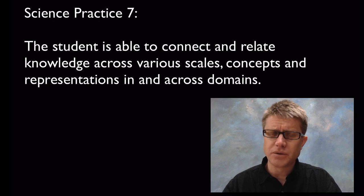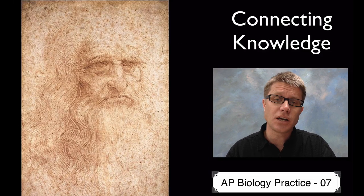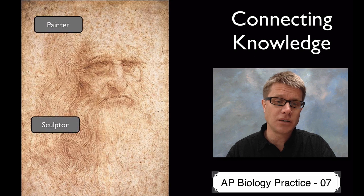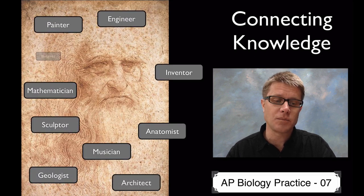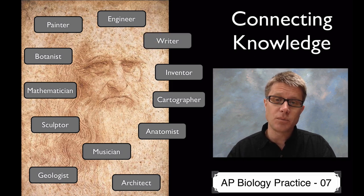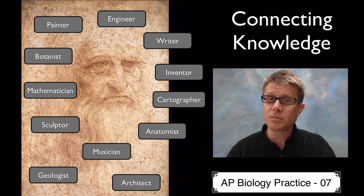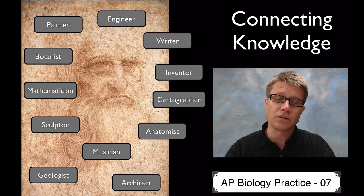That sounds confusing. But I think what they're really trying to get at is they want you to be able to connect knowledge. This is da Vinci, and da Vinci had a lot of different jobs. He was a painter, sculptor, architect, musician, mathematician, engineer, inventor, anatomist, geologist, botanist, cartographer and writer. In other words he brought together all of these different disciplines. And that was common back then. But today we've tended to isolate in each of our different disciplines — if you're a biologist you really concern yourself just with biology. And that's changing — we want you to be able to make these connections.